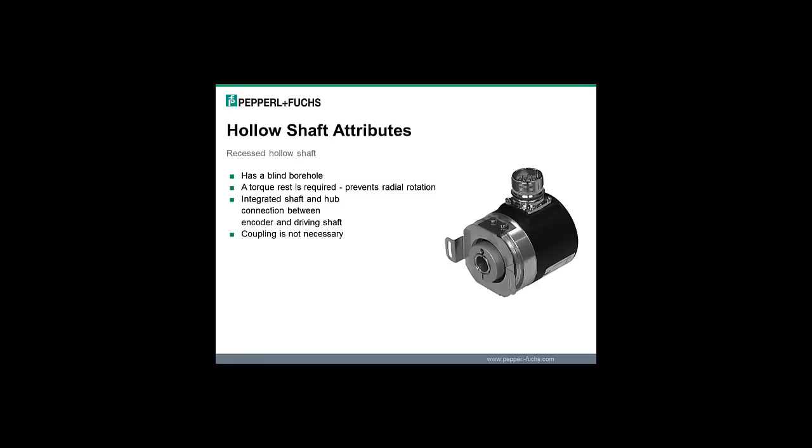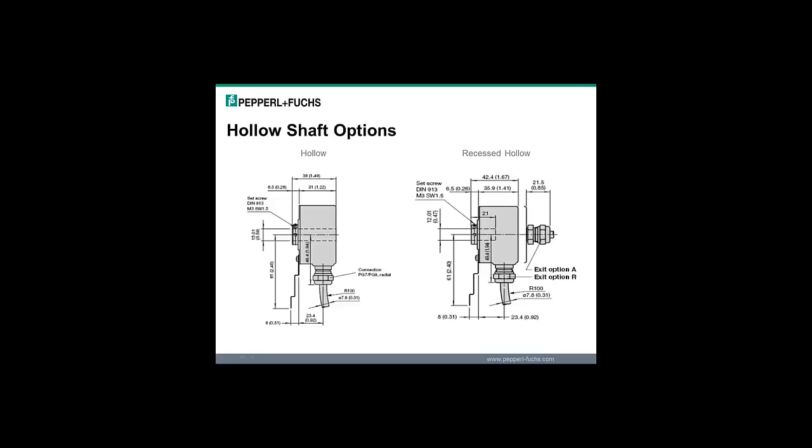The recessed hollow shaft encoder has a blind bore hole that does not go completely through the encoder. There would be a finite depth to this bore hole. This drawing shows a hollow shaft and recessed hollow shaft. The hollow shaft shows a hole through the encoder and the recessed hollow shaft shows a blind hole depth of 21 millimeters. The recessed hollow shaft will have the option of radial or axial cable exit and the hollow shaft will have only a radial cable exit option.